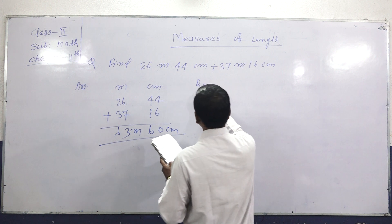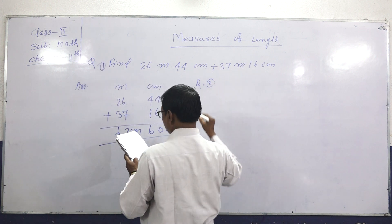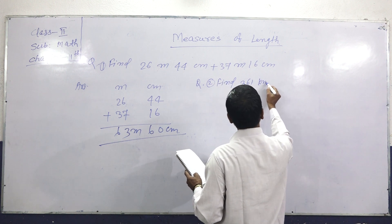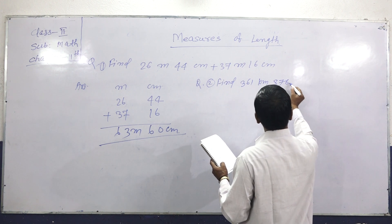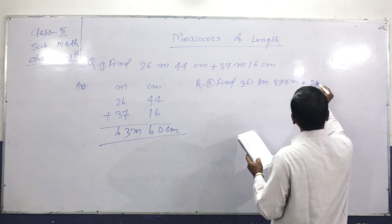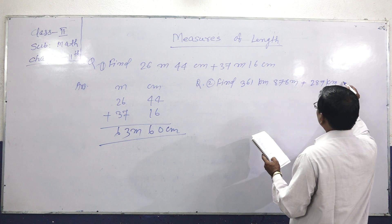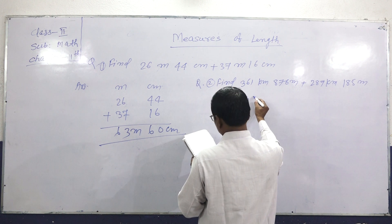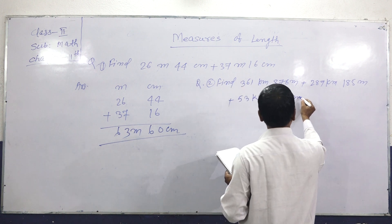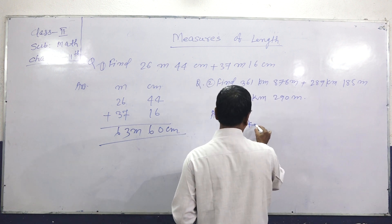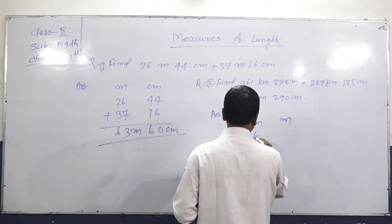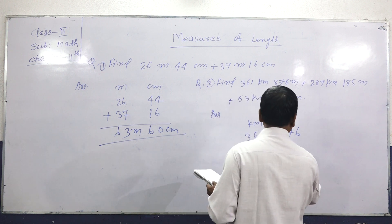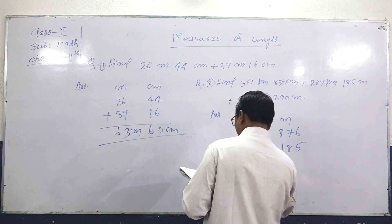Next question. Add 361 kilometers, 876 meters plus 287 kilometers, 185 meters plus 53 kilometers, 290 meters. Let's write: 361 kilometers 876 meters plus 287 kilometers 185 meters plus 53 kilometers 290 meters.